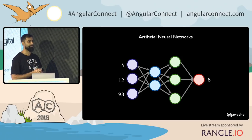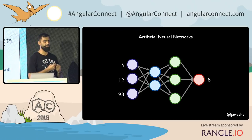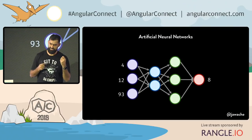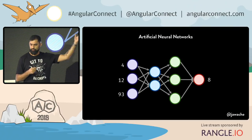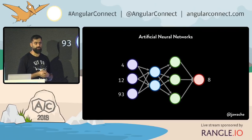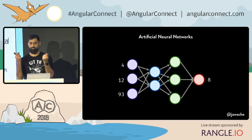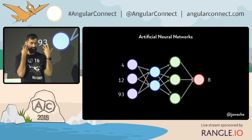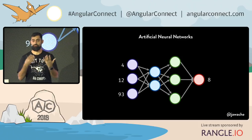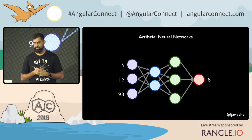So, I might take a labelled dataset — here's a picture, it's happy; here's a picture, it's sad. You feed it in, you train a neural network. Then you give it a new picture of a face, and it will tell you whether that face is happy or sad.